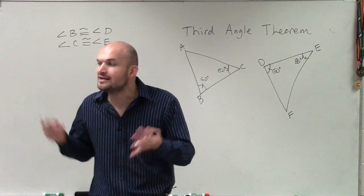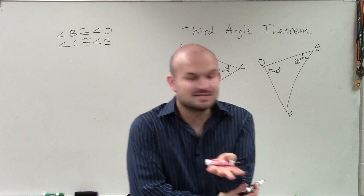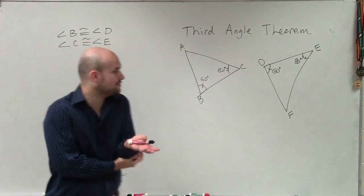Equilateral, isosceles, scalene, they all add up to 180. So if you already have two angles, then that third angle has to be your remaining measure that's going to make you add up to 180.